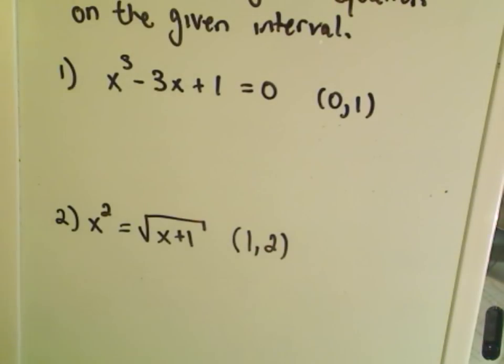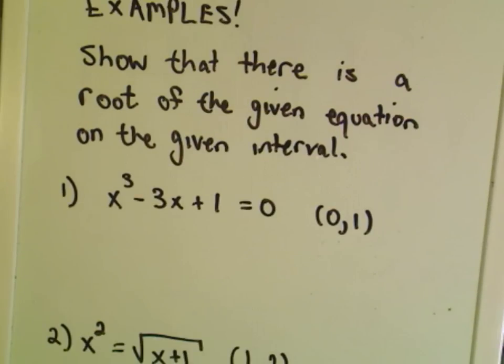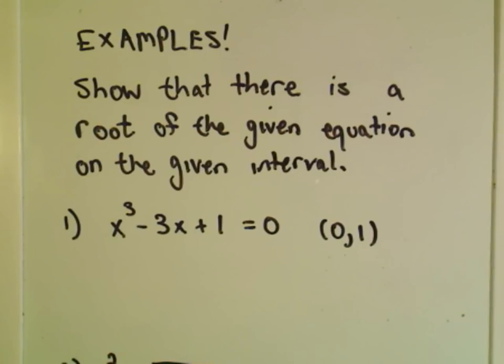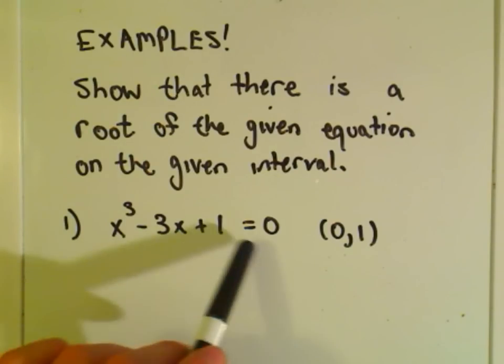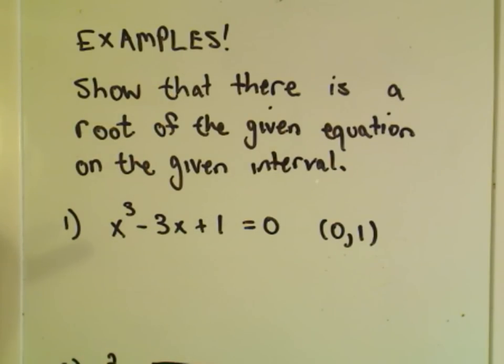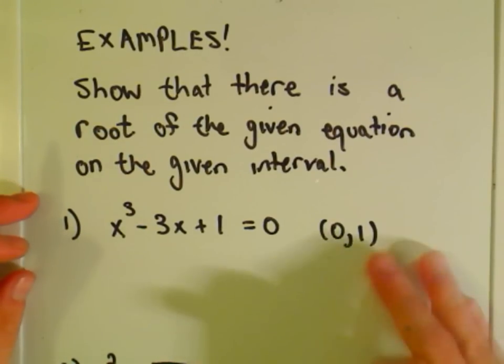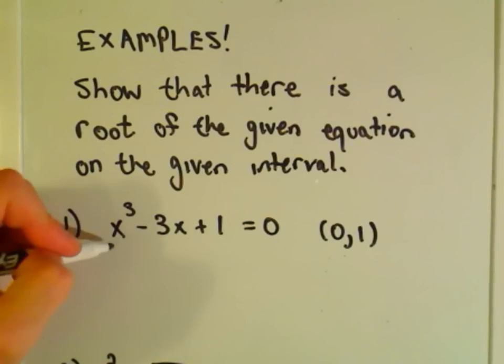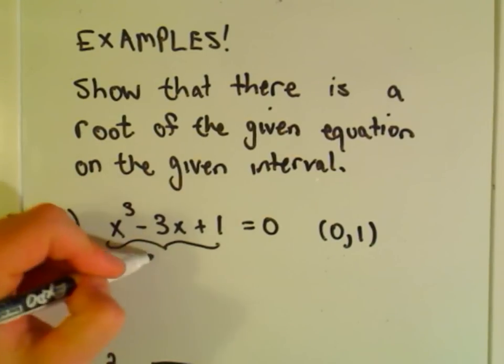Okay, so let's just do a couple examples using the intermediate value theorem. And probably the most common types of problems you're going to see with the intermediate value theorem are these. It says, show that there is a root of the given equation on the given interval. And remember, a root, you're just taking an equation and trying to figure out where it equals zero. That's what it means to be a root. Okay, so they give me the interval zero to one. And then, well, if I call this my function f(x).